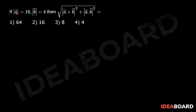If modulus of a bar equals 16 and modulus of b bar equals 4, then find the square root of modulus of a bar cross b bar whole square plus modulus of a bar dot b bar whole square.